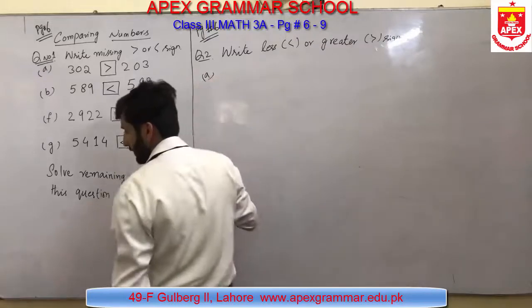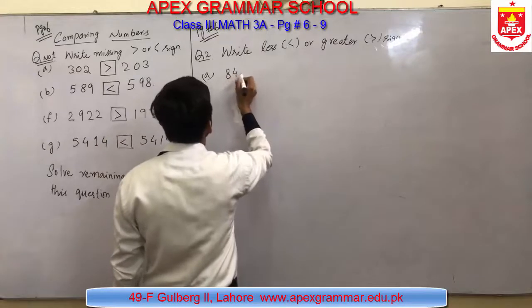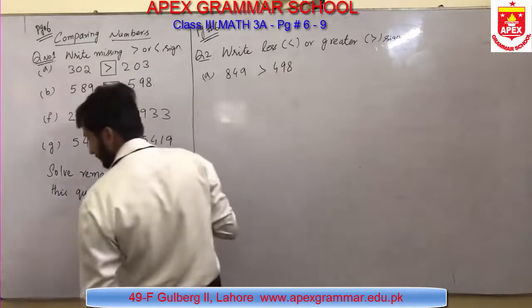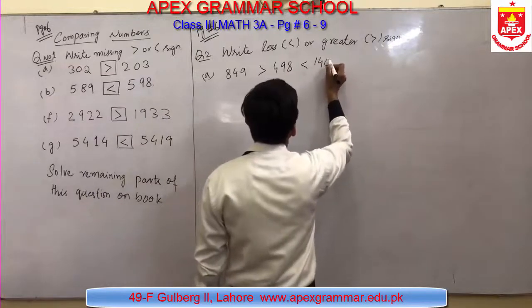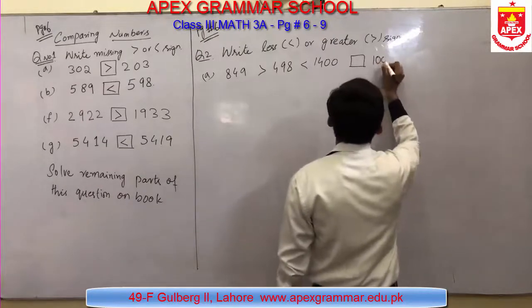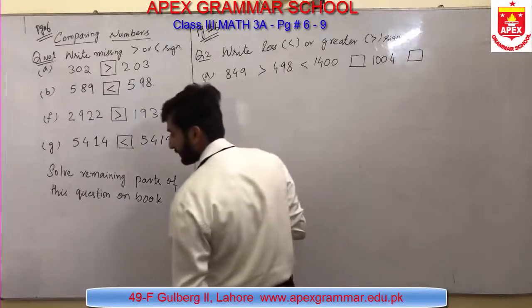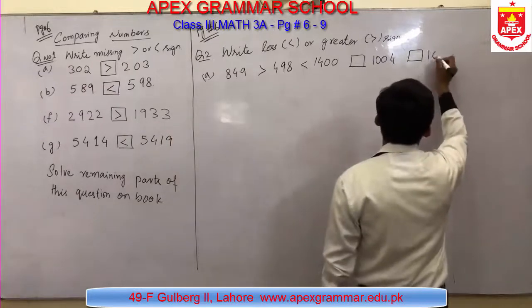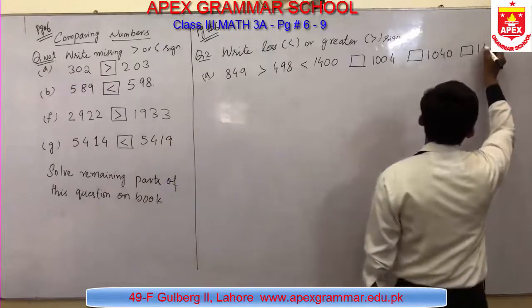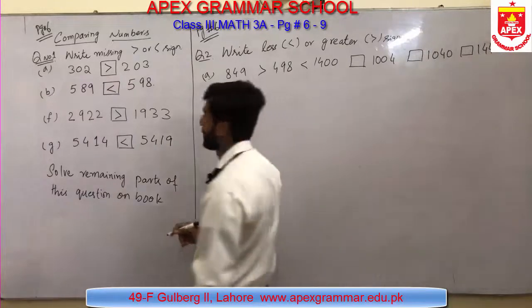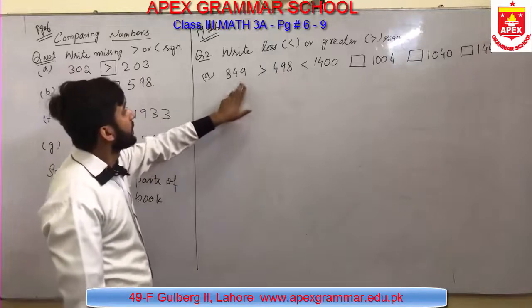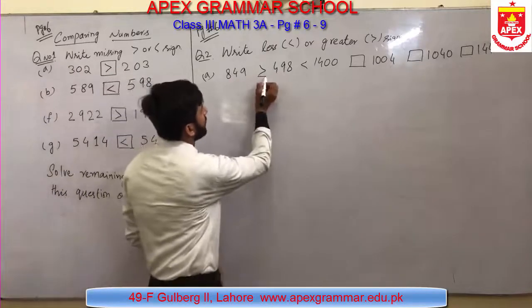Part A of question 2: 849, empty box, 498, empty box, 1400, empty box, 1004, empty box, 1040, empty box, 1440. First number is 849 and second is 498, so 849 is greater than 498 — place the greater than sign. Next, 498 is the first number and 1400 is second, so 498 is less than 1400.